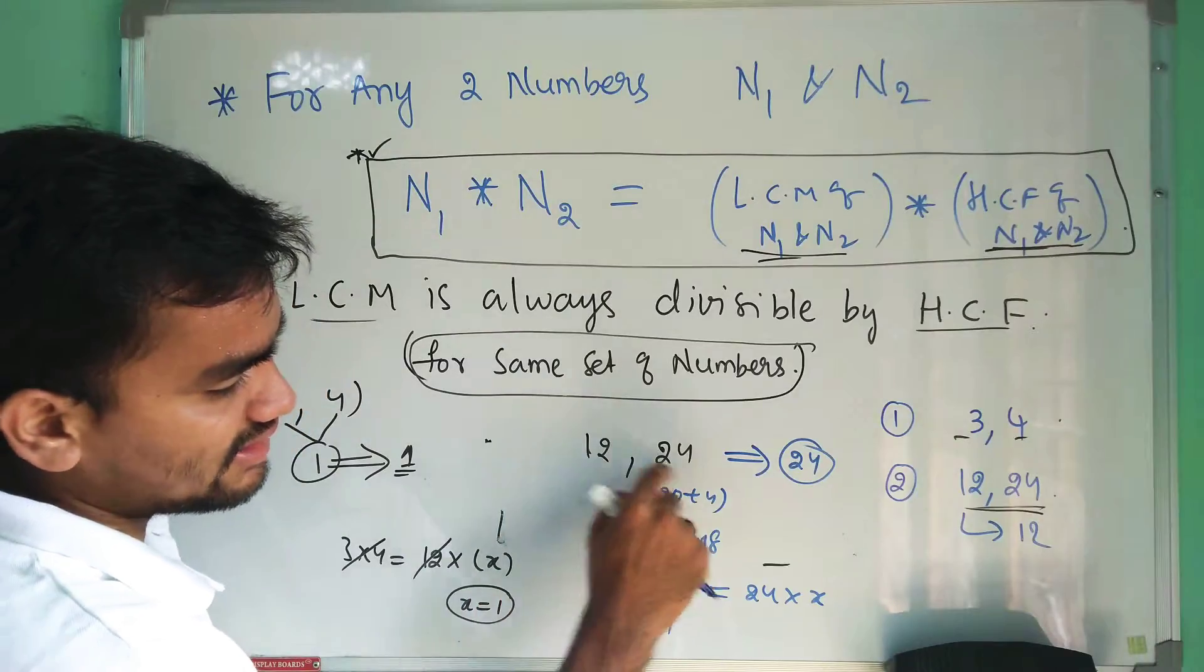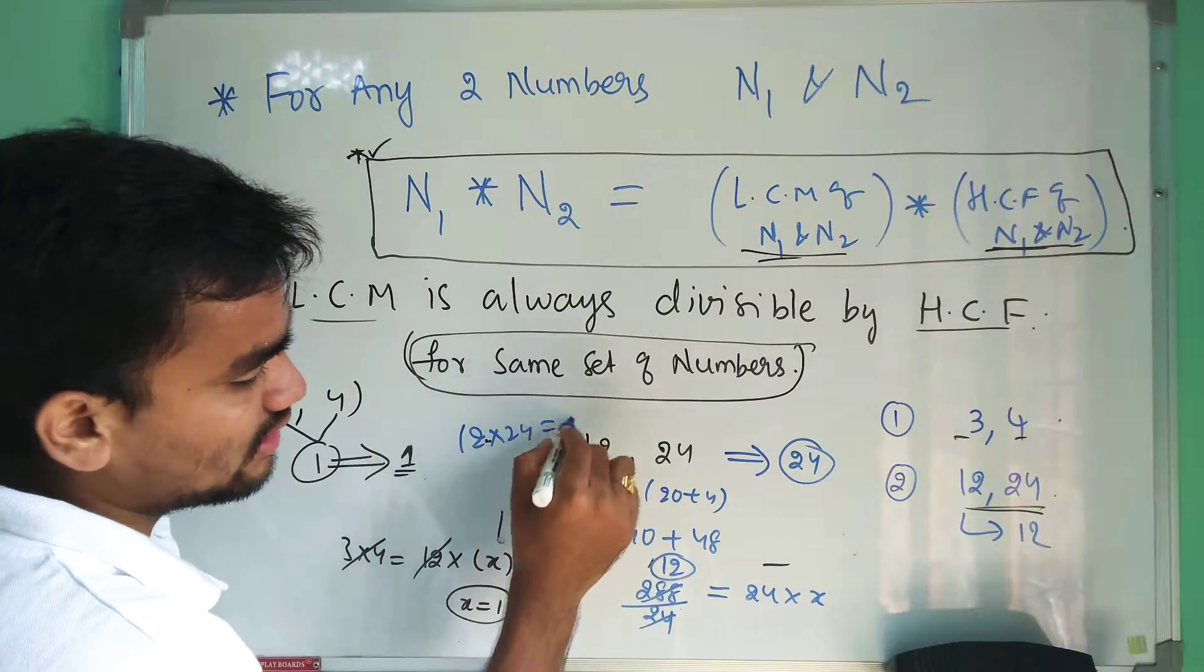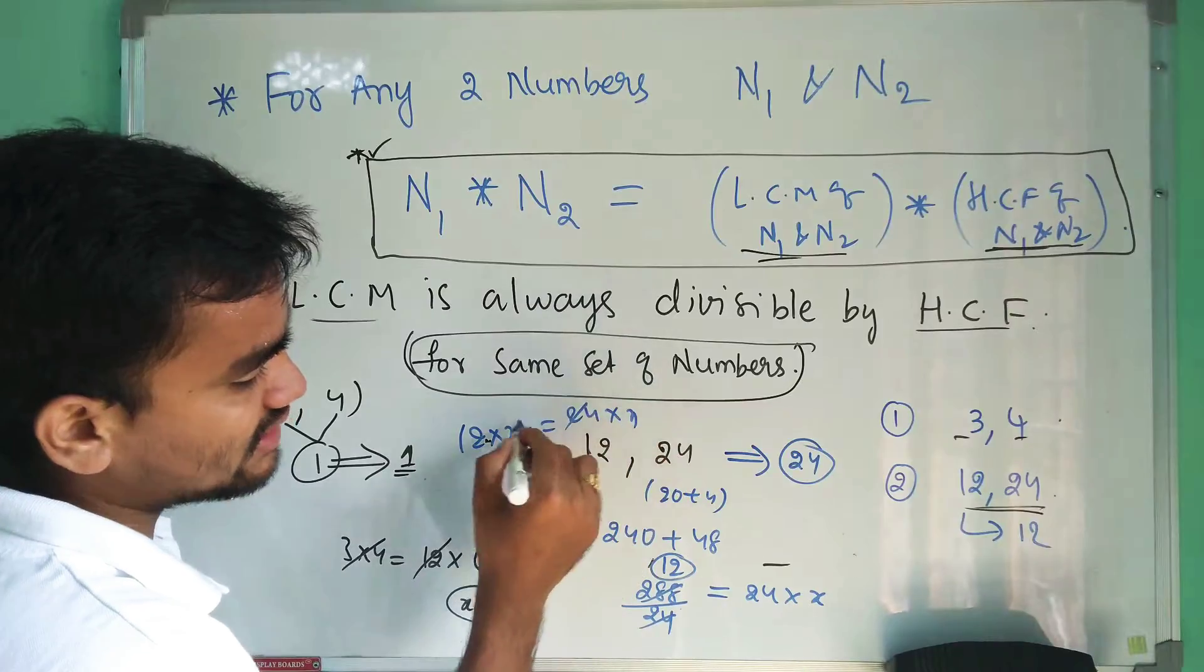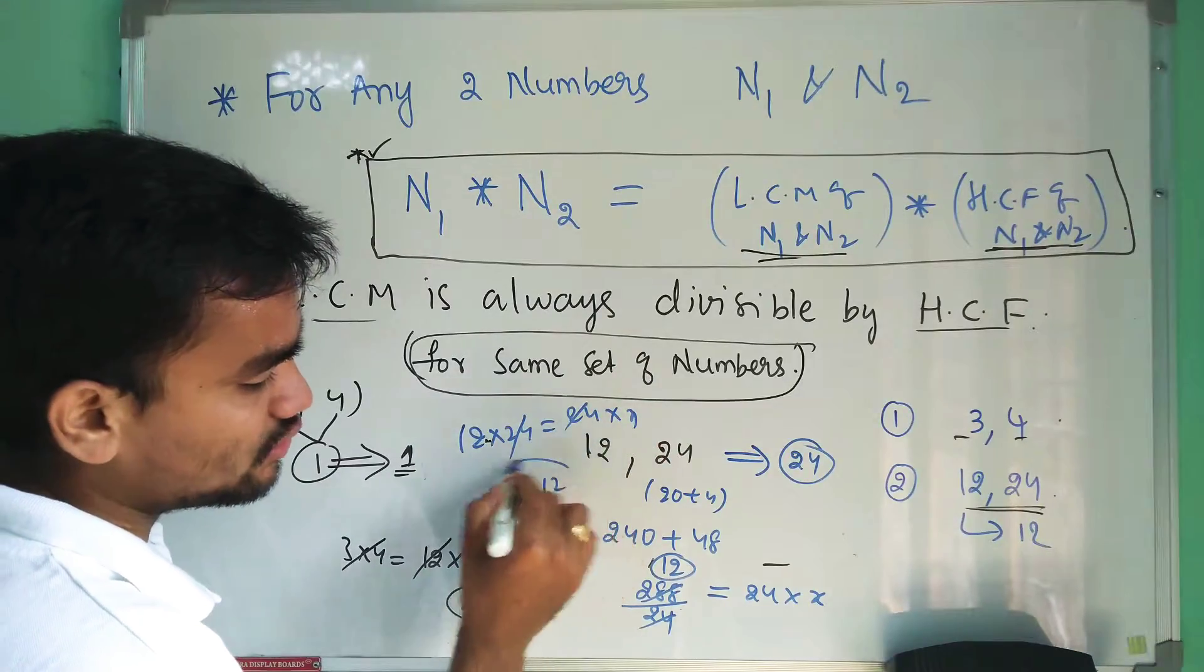So you can say that HCF of these two numbers is 12. I think I basically multiplied these two. I can simply write this as 24 times x, so 24 gets cancelled. So the HCF of these two numbers is 12.